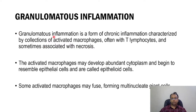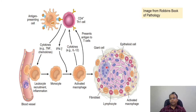Chronic granulomatous inflammation consists of lymphocytes, macrophages, fibrosis, and giant cells. Sometimes in the center, caseous necrosis can also be seen. In most cases, caseous necrosis is present and is also a component of granuloma — centrally, caseous necrosis is present. The morphology of epithelioid cell includes abundant cytoplasm, boot shape, and resemblance to epithelium. When they fuse together, they form giant cell.